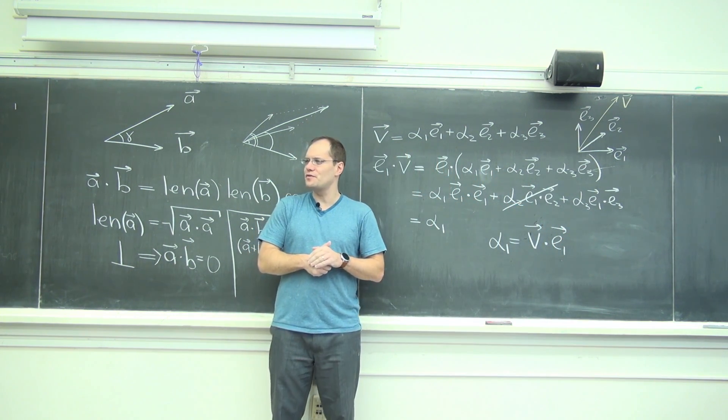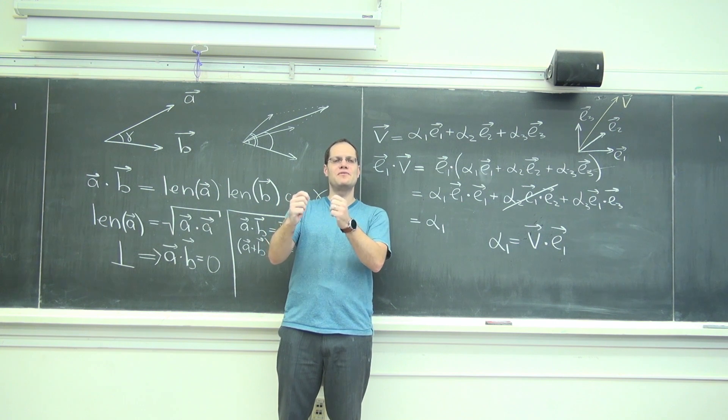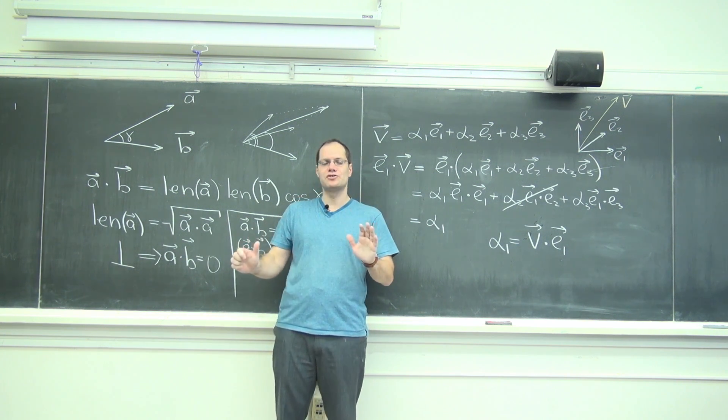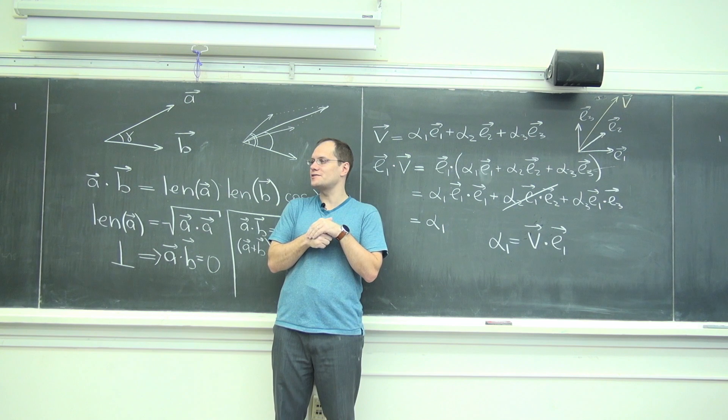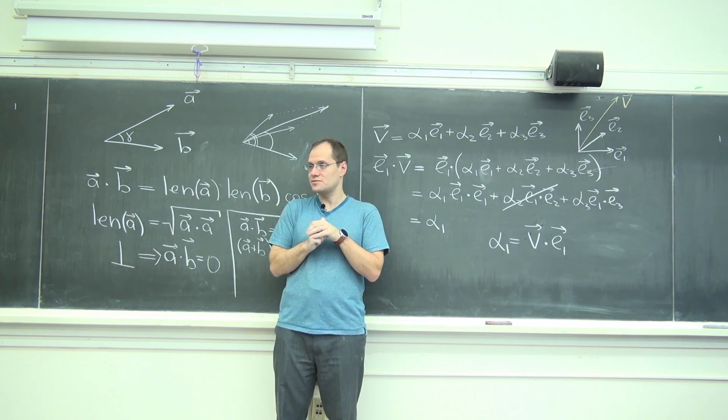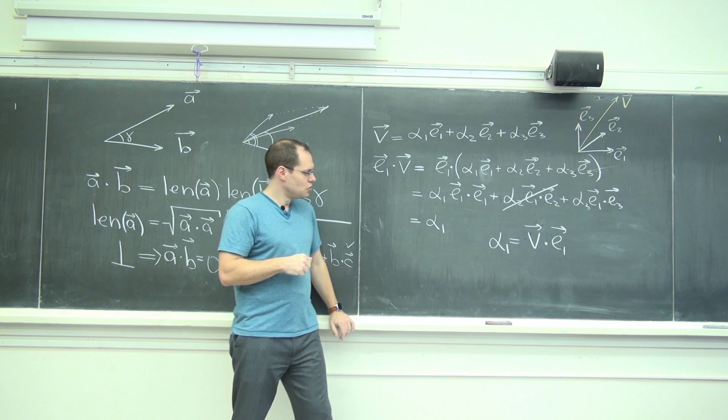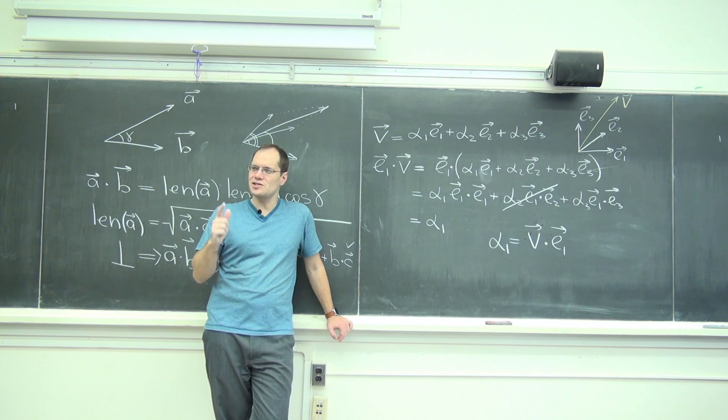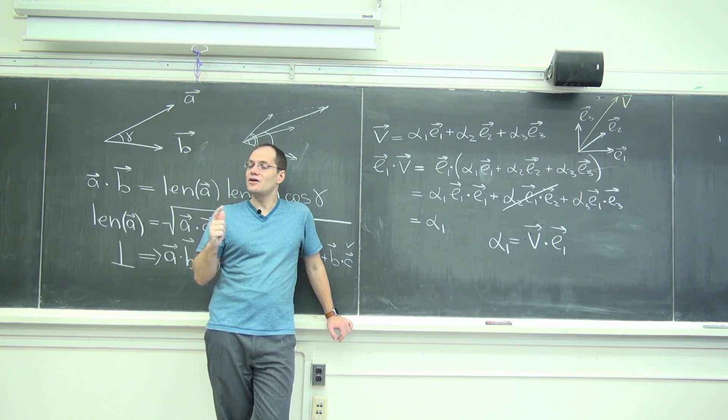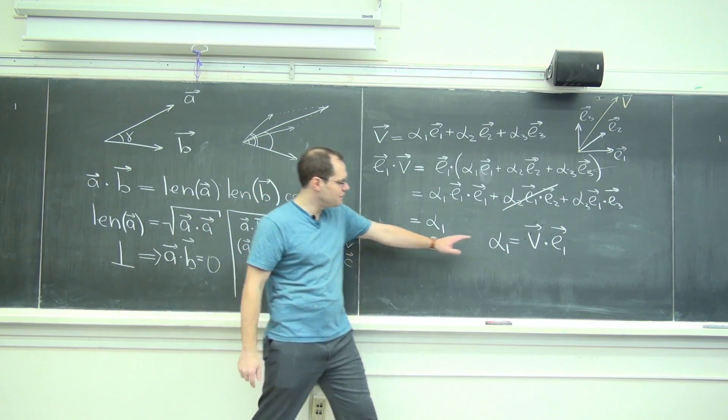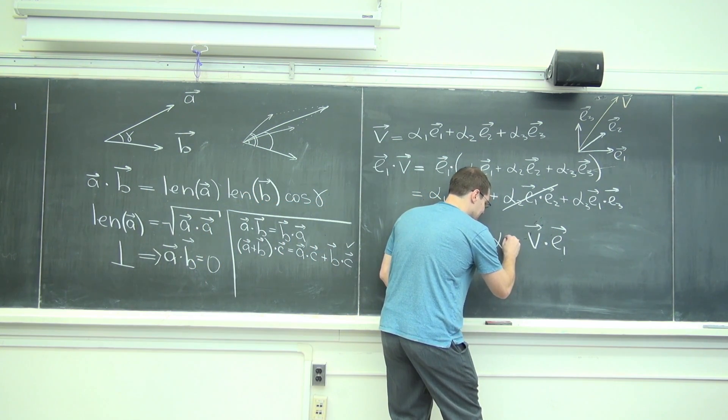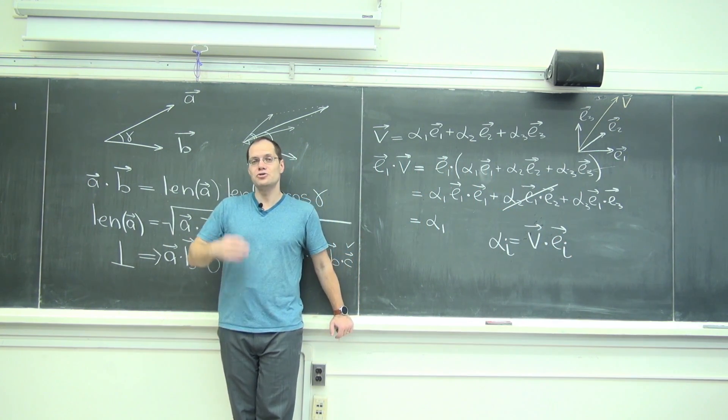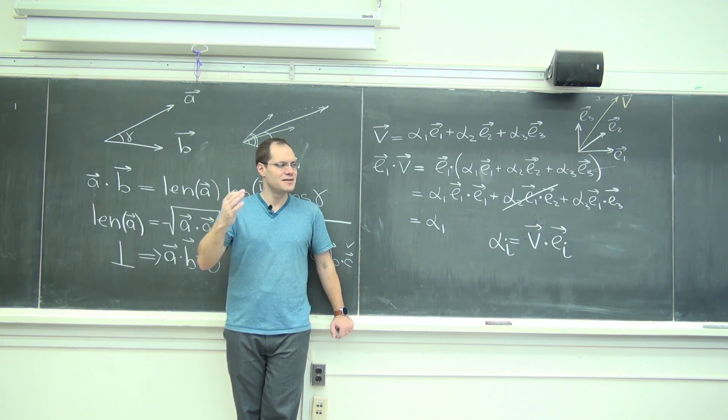Does that sound familiar if you've ever taken physics? That the component of a vector with respect to a basis is the dot product with a basis element. Who is hearing this for the first time? But only if the basis is orthonormal. So when the basis is orthonormal, then all you need to do is dot V with E1. Alpha I equals V dot EI. You just dot it with the corresponding element in the basis.